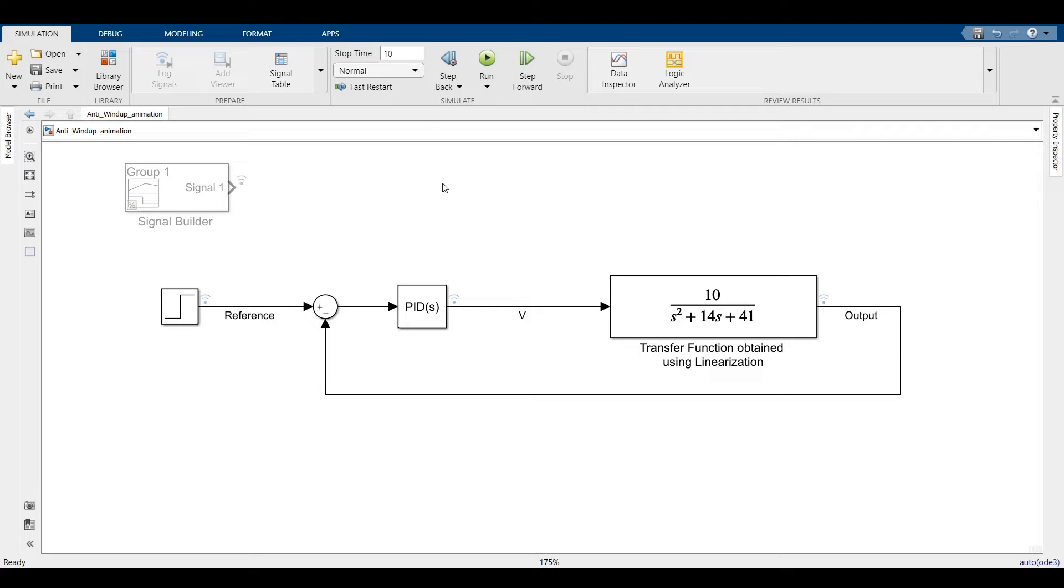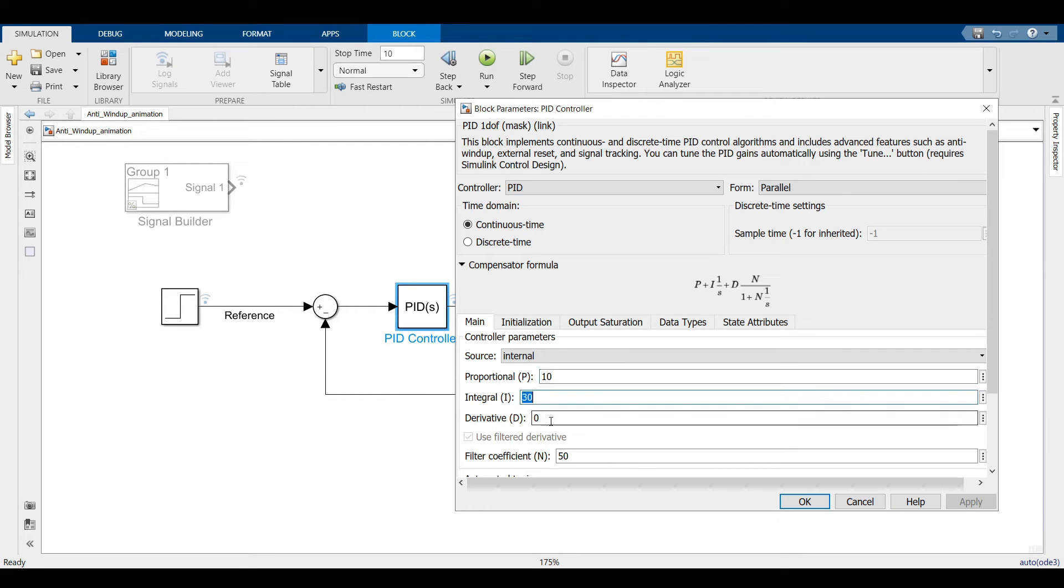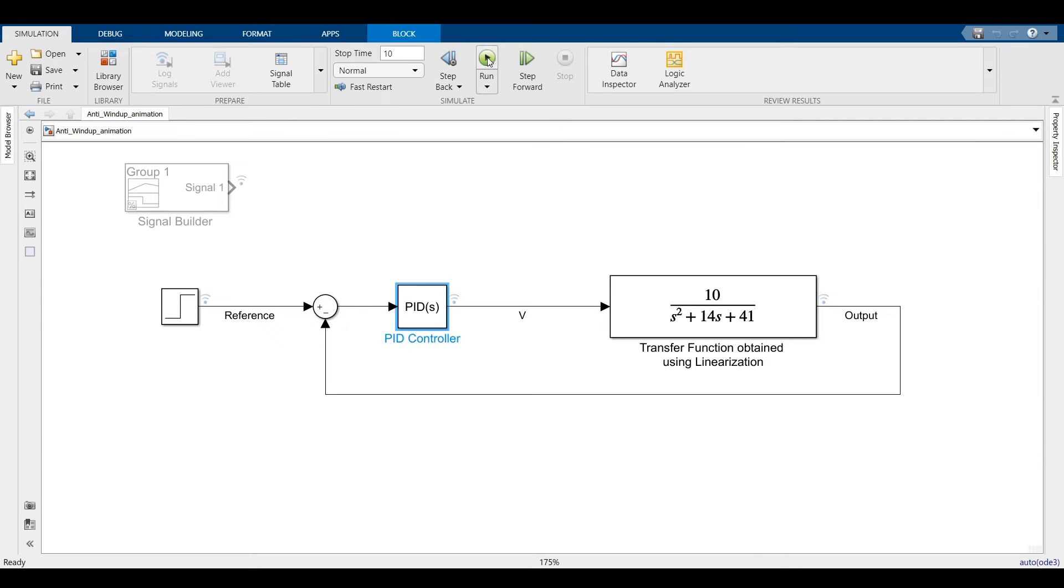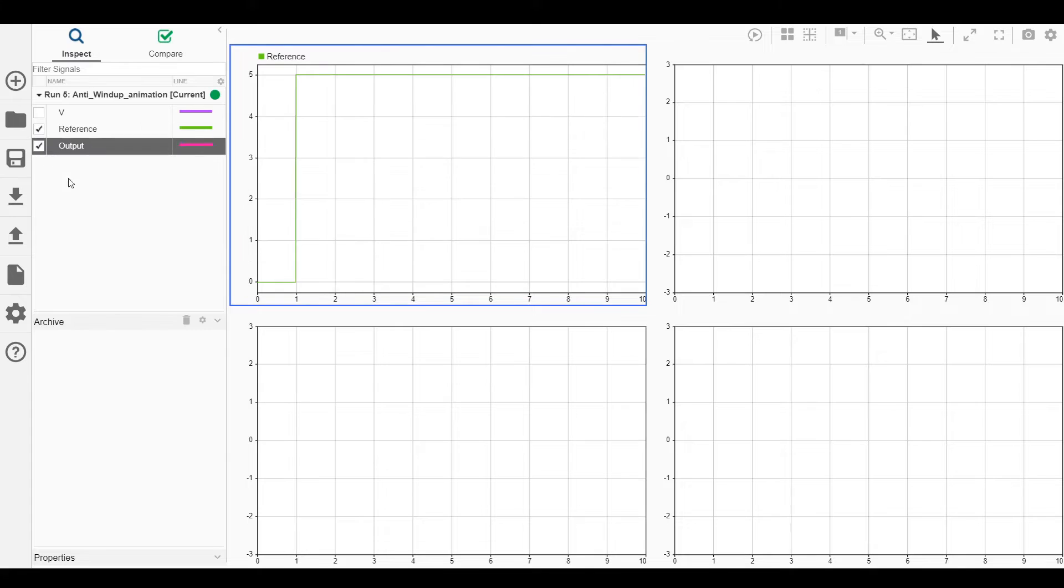Let us see how this will affect our control. In the last video, we tuned the PID controller for speed control of a DC motor. I have changed the PID gains here slightly and removed the differentiator to keep things simple.